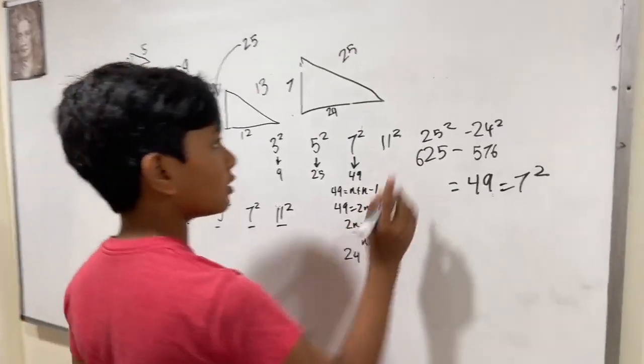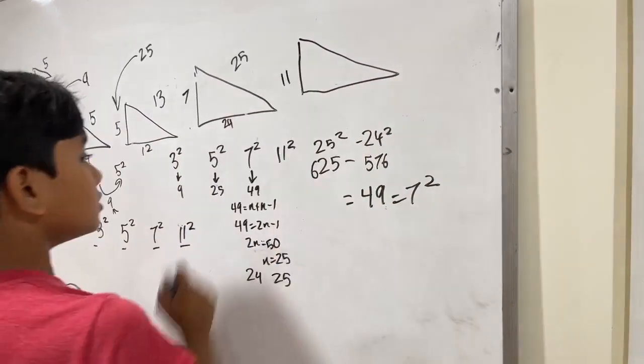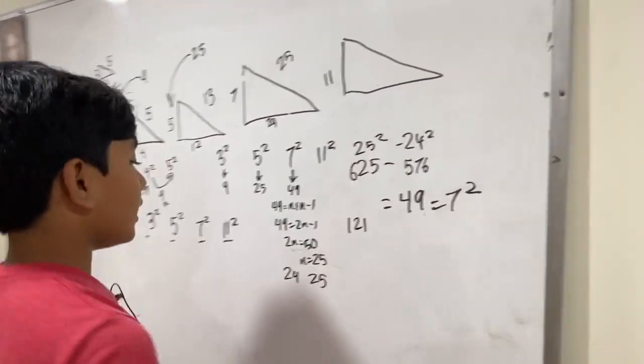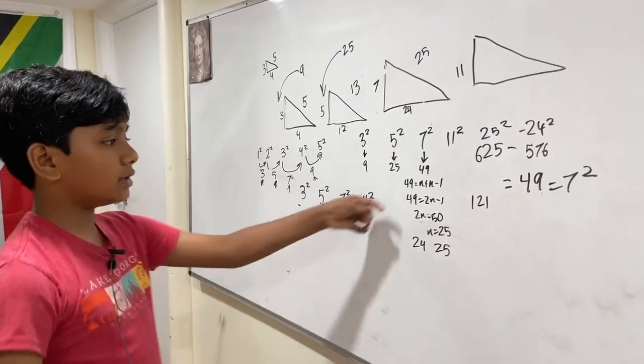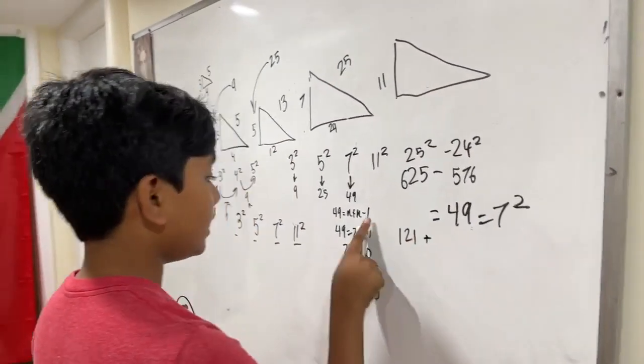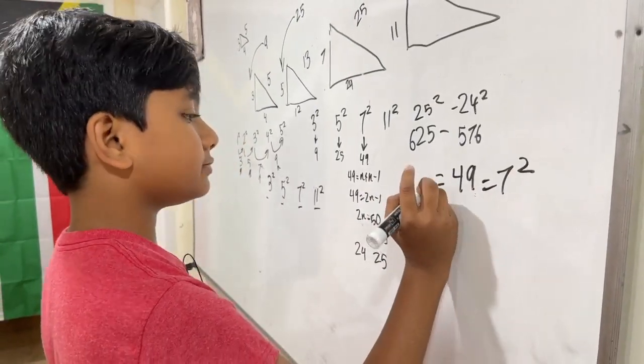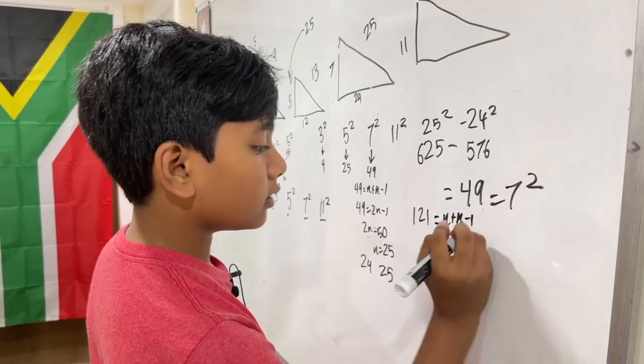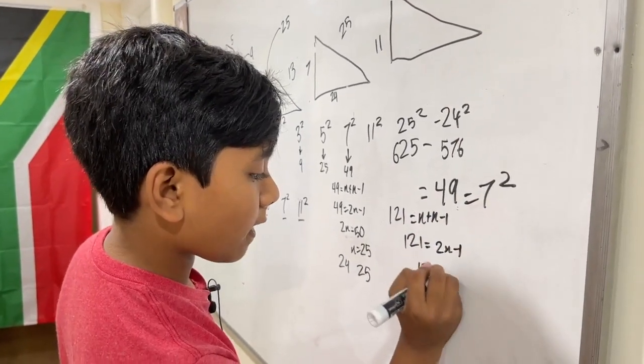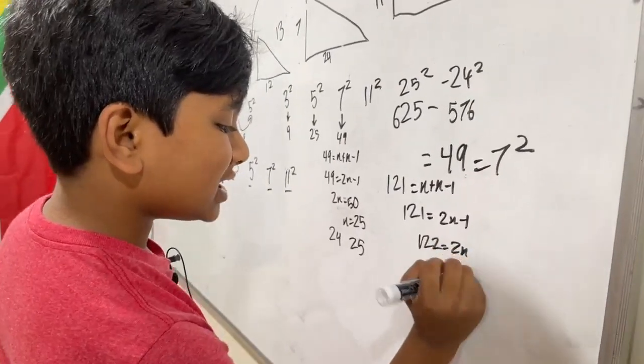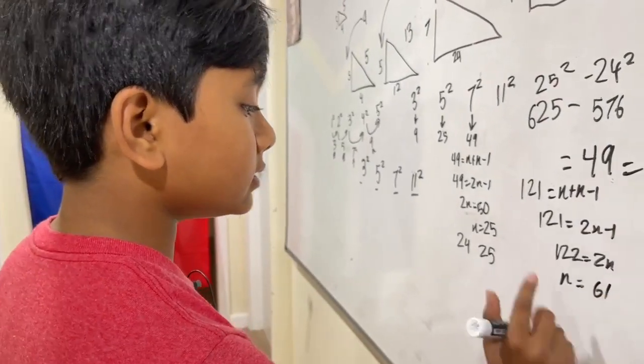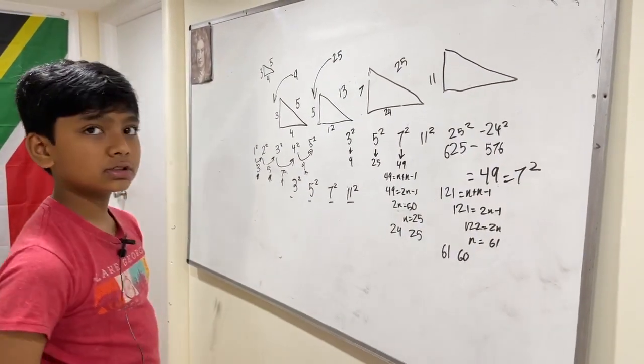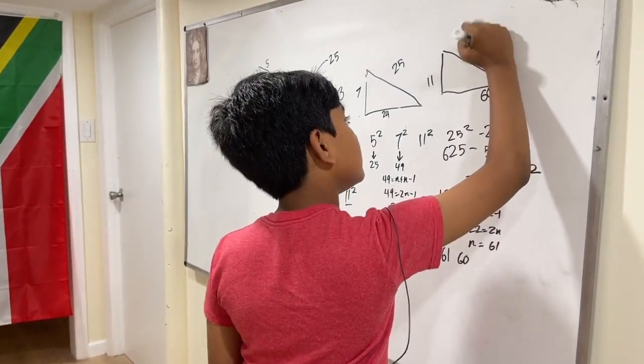And then 11 squared, I can calculate the next one as well. We have to find 2 numbers that add up to 121. We simply do the same thing we did here. 121 equals n plus n minus 1, and we just undergo the regular procedure. We get n is equal to 61. That means that we have 61 and 60, which both add up to 121 as our sidelines. So the next one would be 11, 60, 61.